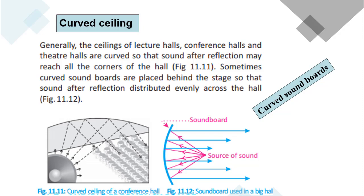In lecture halls and conference halls, curved surfaces are used. If you go to a church hall, you will notice the ceiling is curved. When sound is produced, it travels in every direction. When the sound reaches the curved ceiling, it reflects and distributes throughout the hall. Curved sound boards are placed at the back side of large halls where sound is produced, so that when sound reflects it is distributed evenly across the hall.